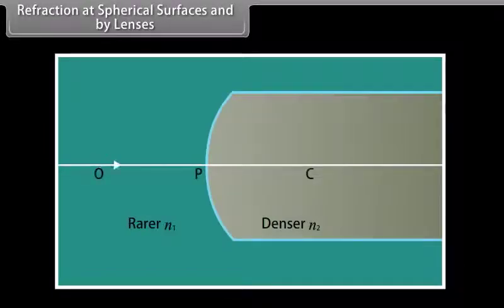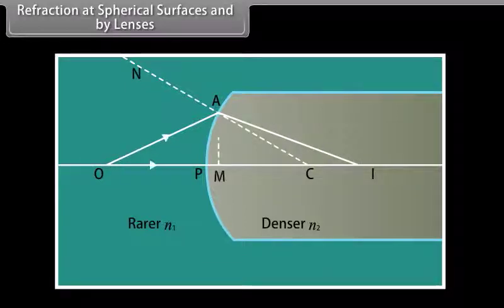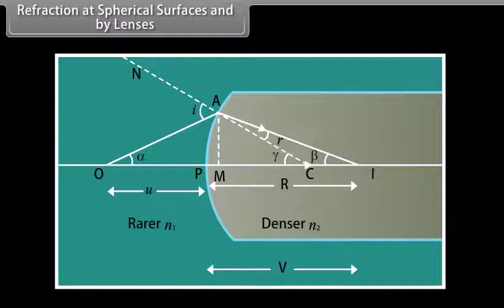Refraction at a spherical surface. The figure shows a convex refracting surface separating two media. Let P be the pole and C the center of curvature of the refracting surface. Let N1 and N2 be the refractive indices of the rarer and denser media respectively.